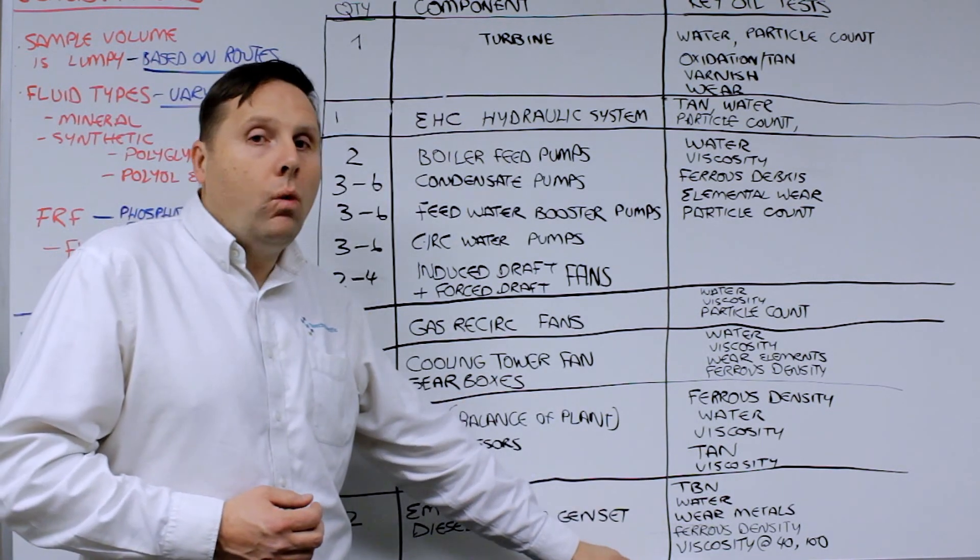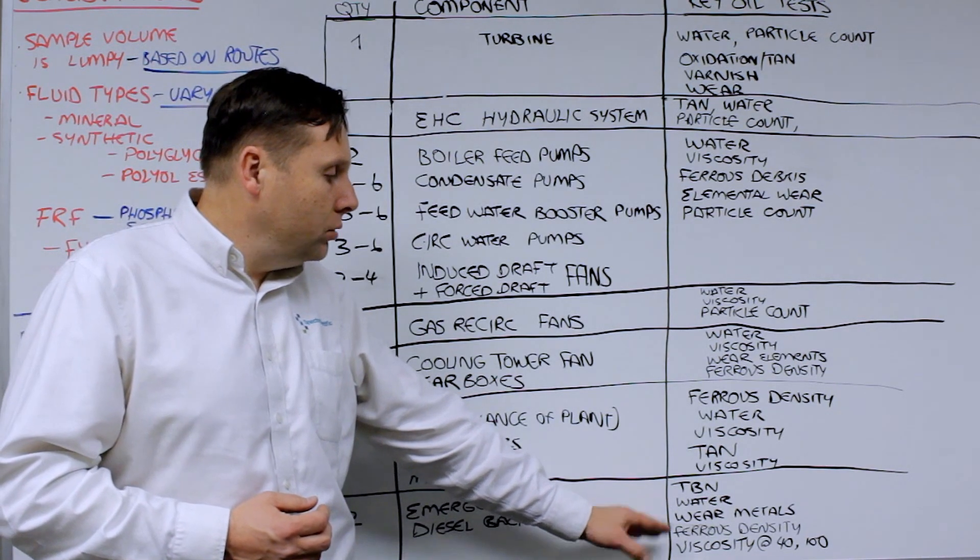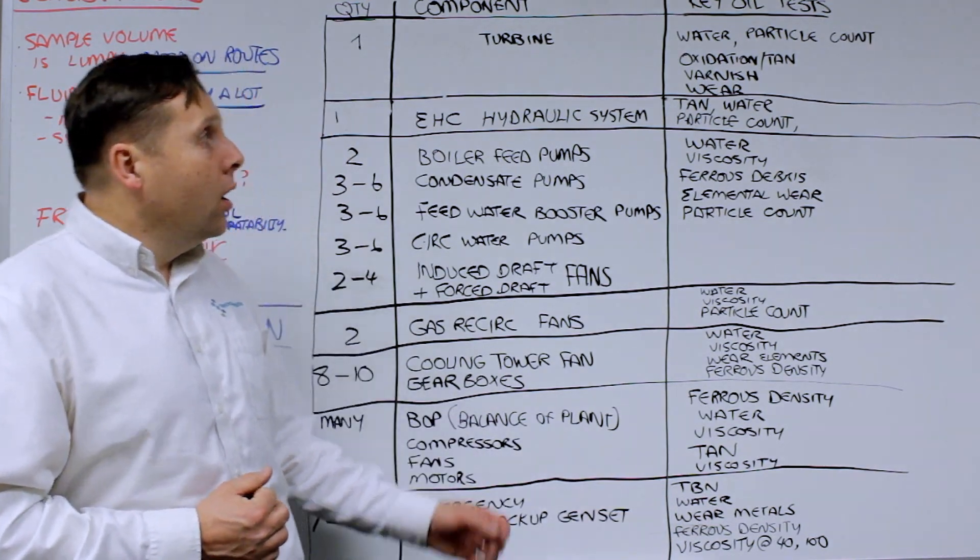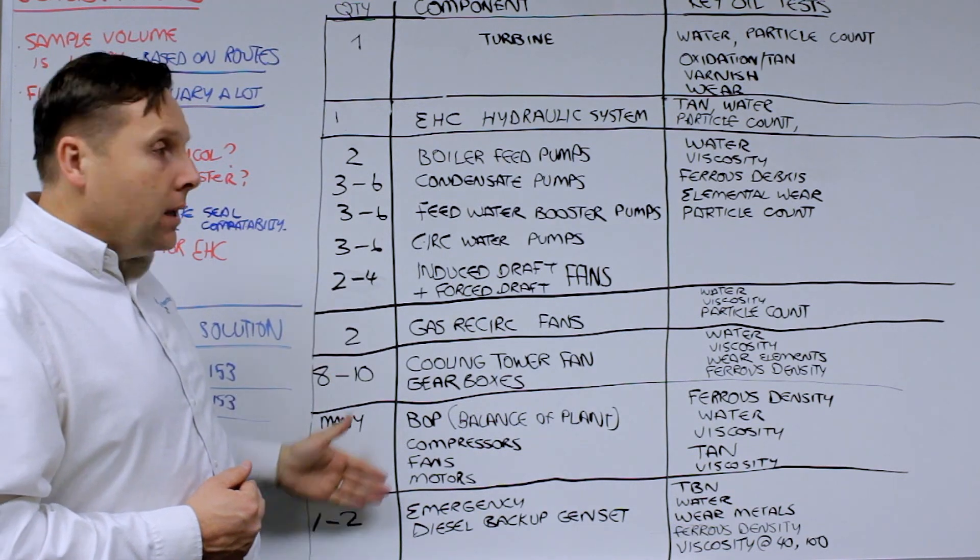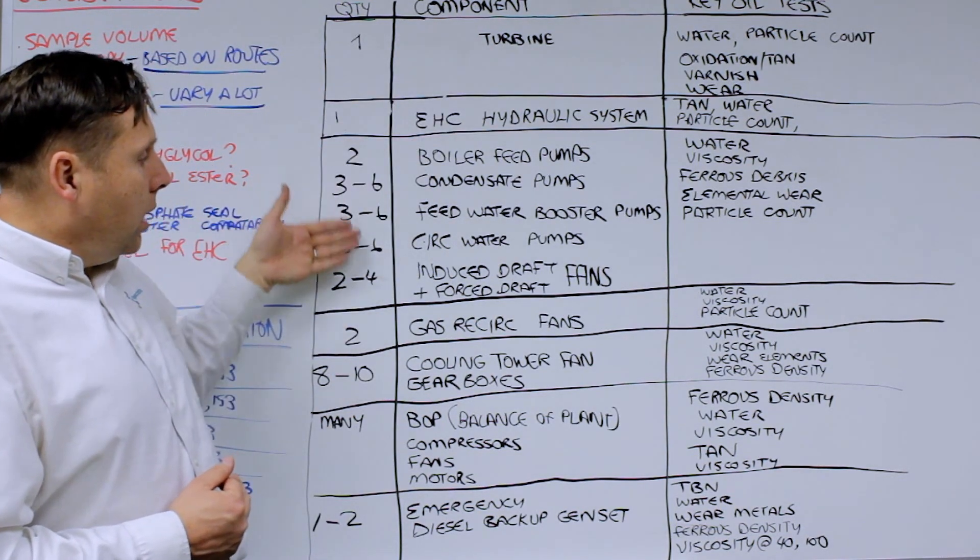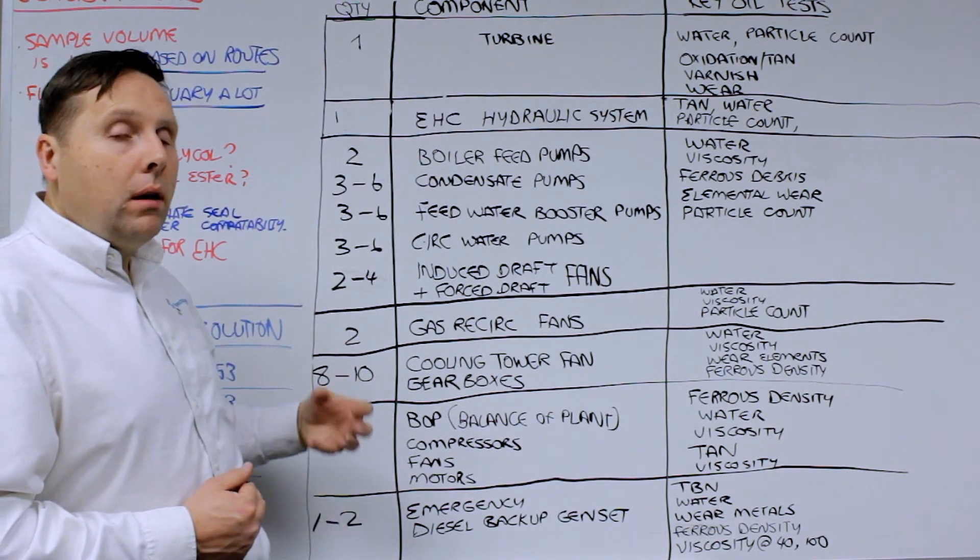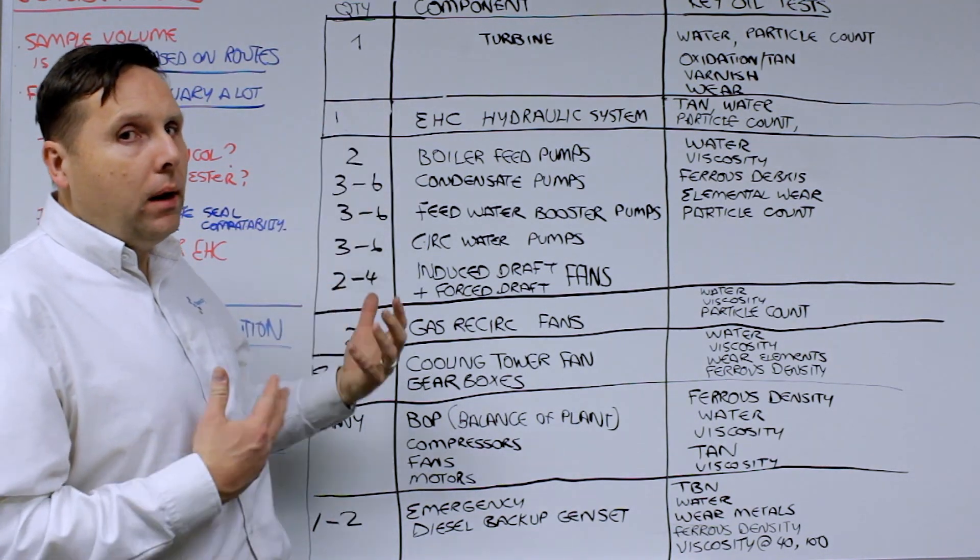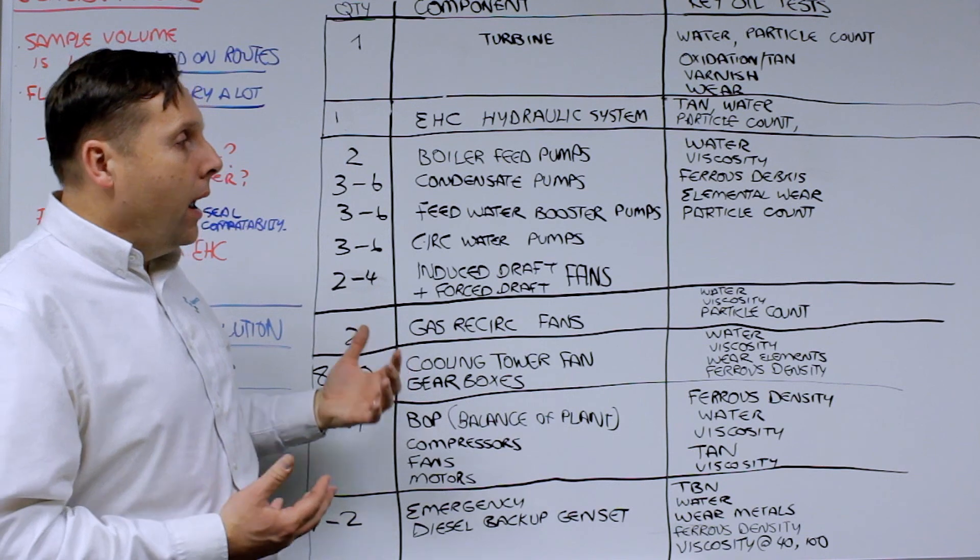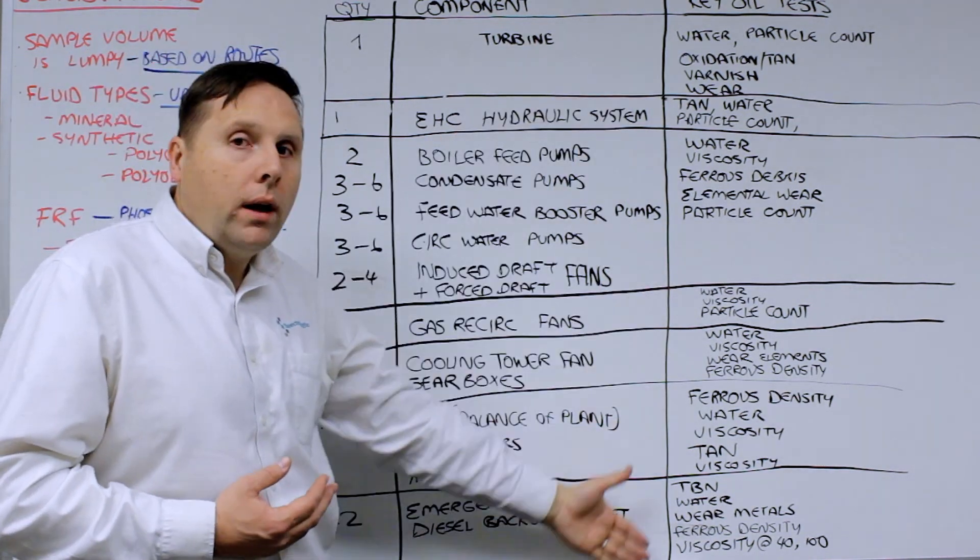And they need to be watched for a routine check, including of course the engine oil monitoring. So on any one generating unit, this is the amount of assets. So you can imagine the amount of samples that are generated that can be done on a weekly, monthly, or quarterly, depending on the cycle and the severity.